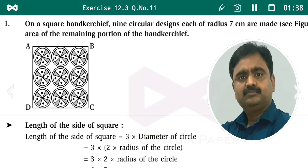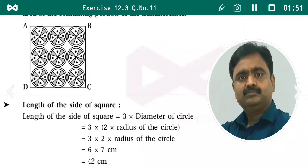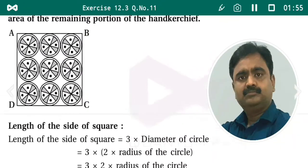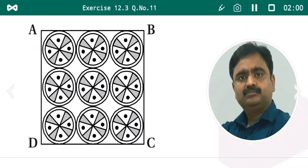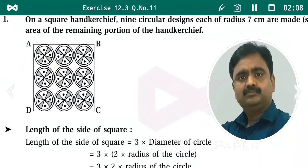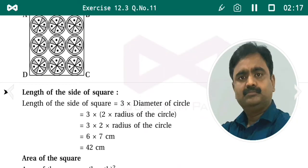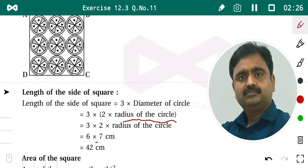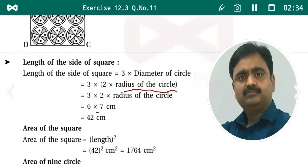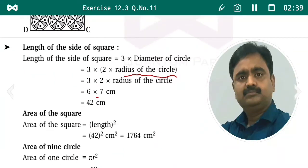To find the area of the remaining portion, first we have to find the length of the side of the square. The length of the side of the square equals three times the diameter of the circle. Since the radius is 7 centimeter, the diameter of one circle is 14 centimeter. So side = 3 × 2 × radius = 6 × 7 = 42 centimeter.